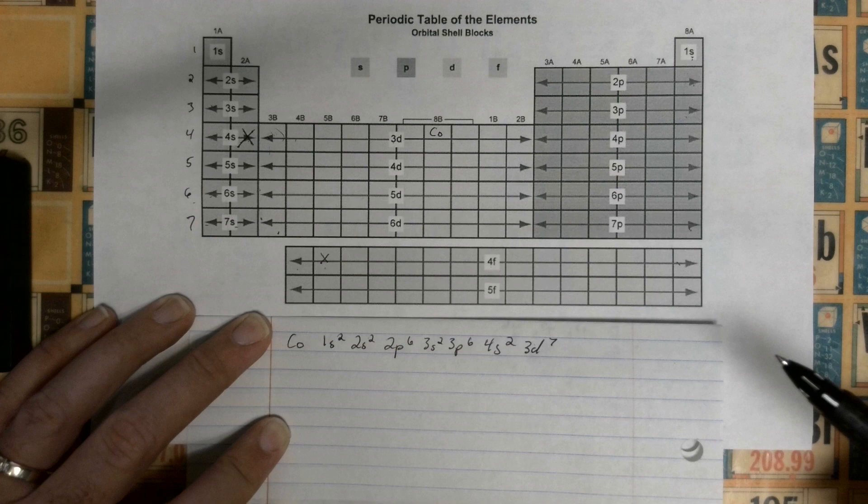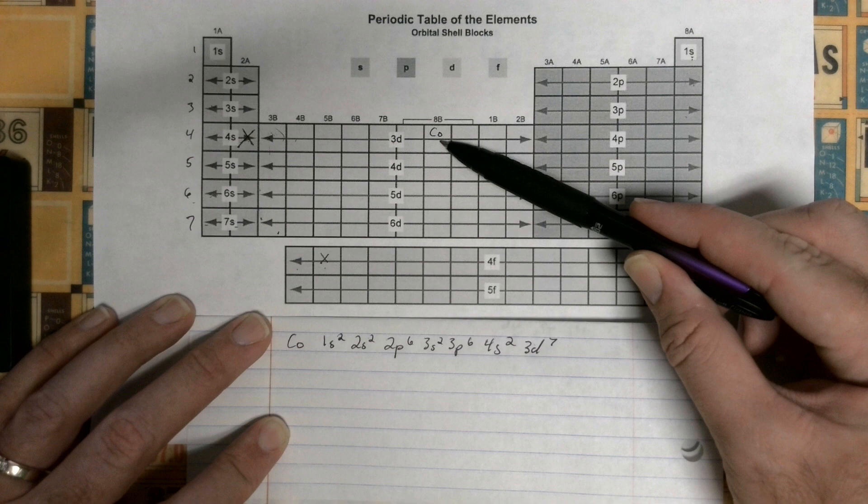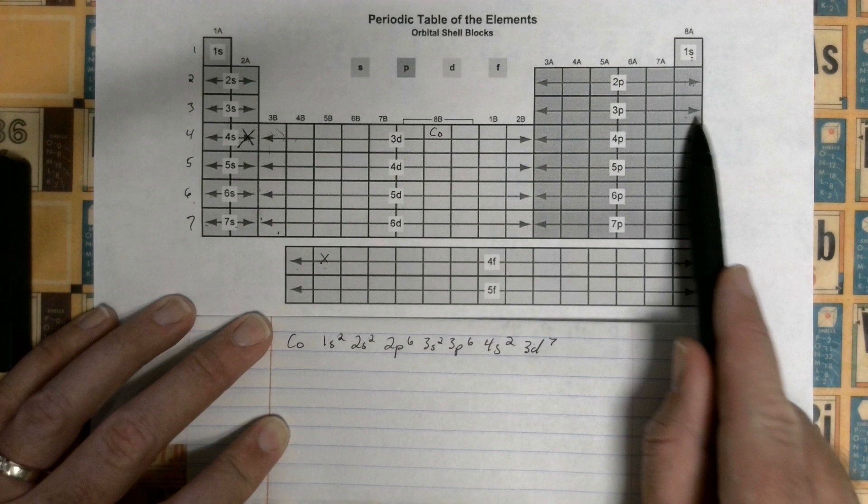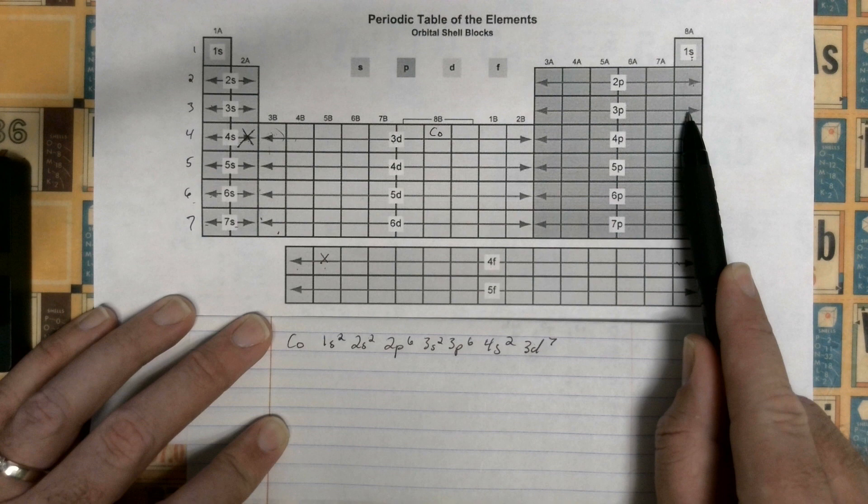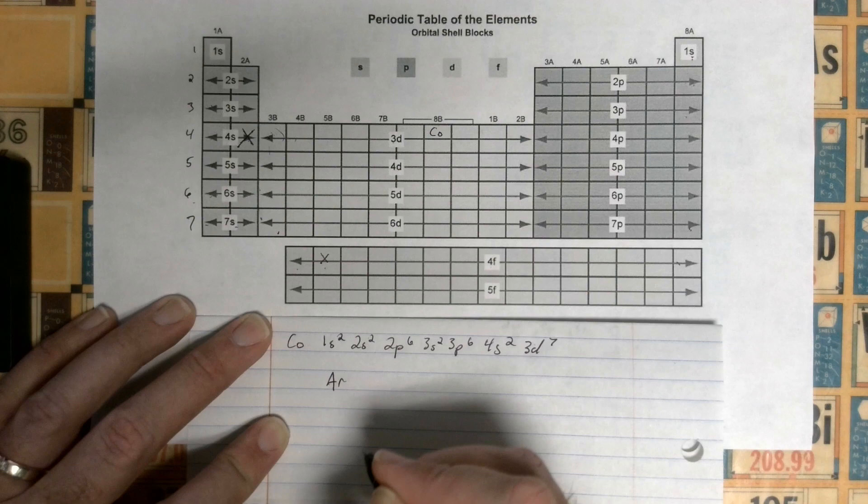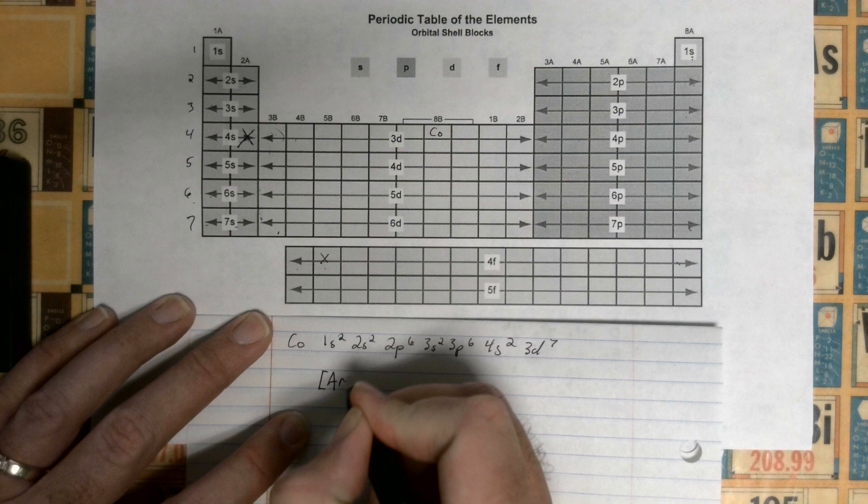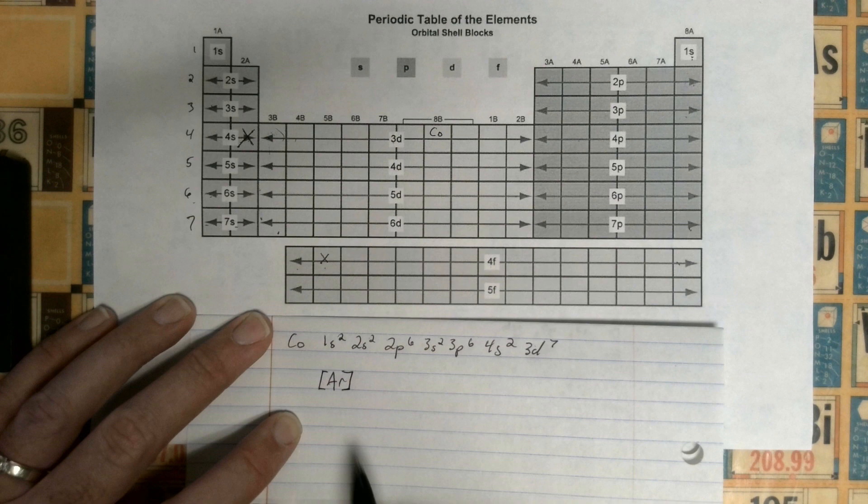Well, what we can do instead of writing all that out is from Cobalt we can go back to the previous noble gas. If I go back here, that's the previous noble gas. Remember, these are the noble gases, so the noble gas that's in the third period is Argon. So we can write Argon, and we put Argon in brackets.